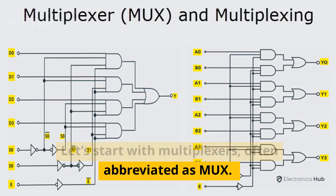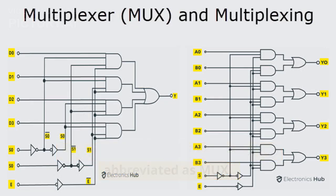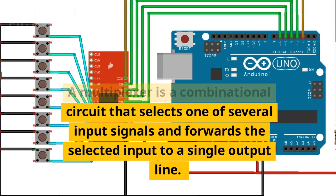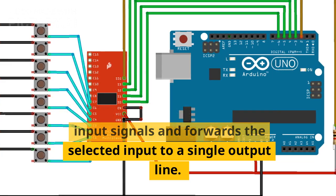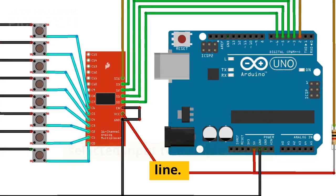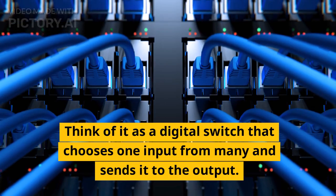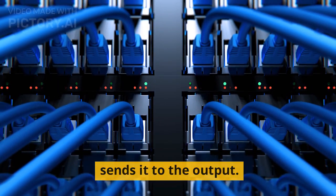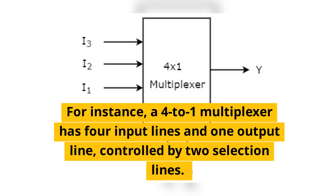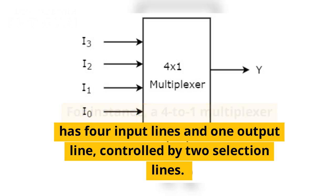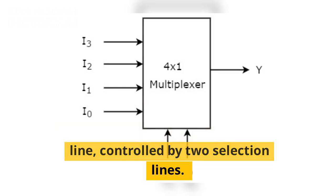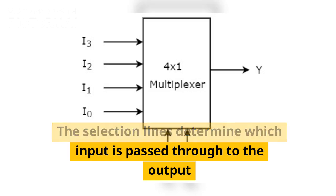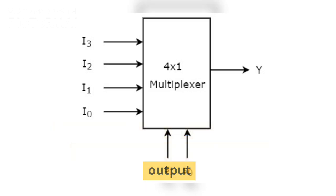Let's start with multiplexers, often abbreviated as MUX. A multiplexer is a combinational circuit that selects one of several input signals and forwards the selected input to a single output line. Think of it as a digital switch that chooses one input from many and sends it to the output. For instance, a 4-to-1 multiplexer has four input lines and one output line, controlled by two selection lines. The selection lines determine which input is passed through to the output.